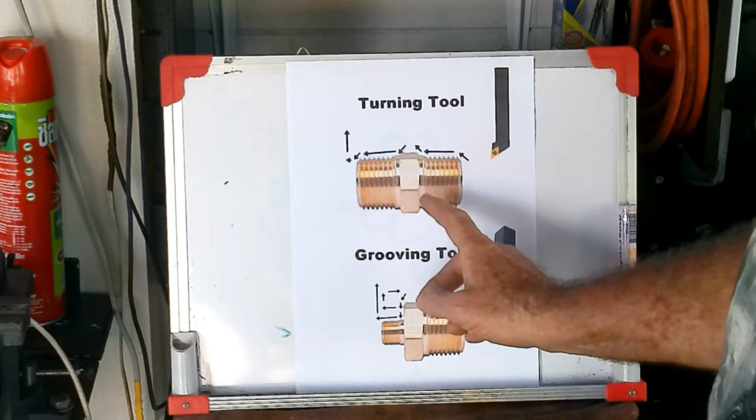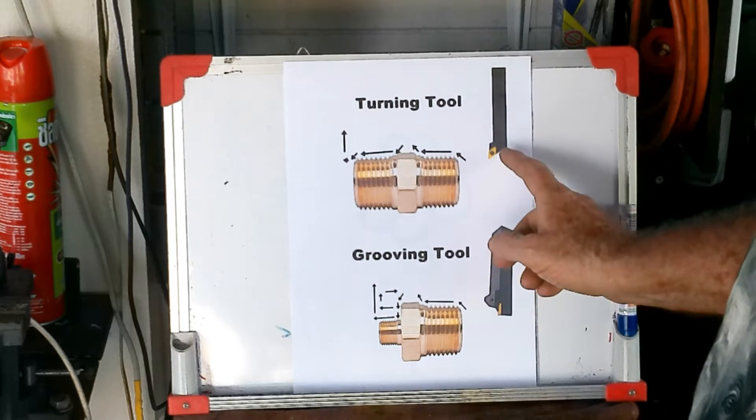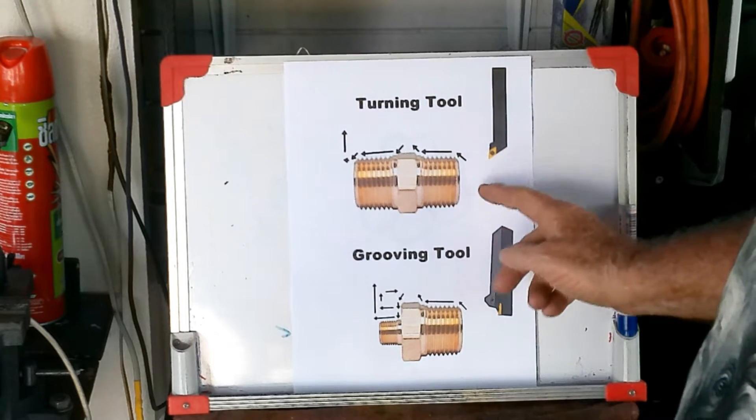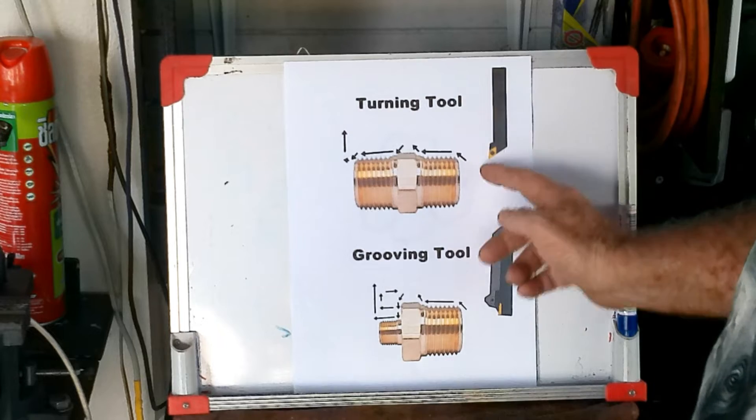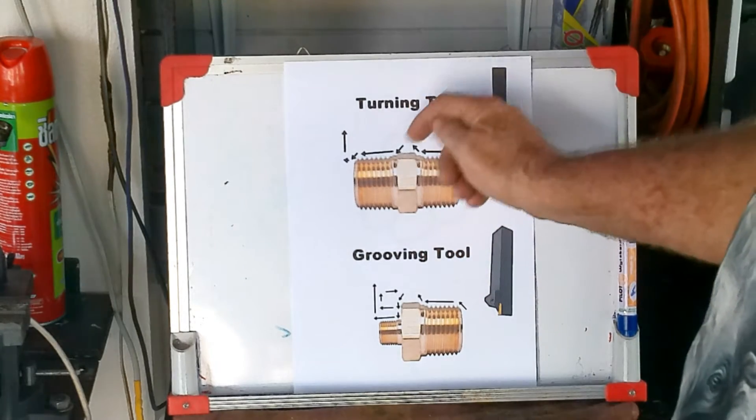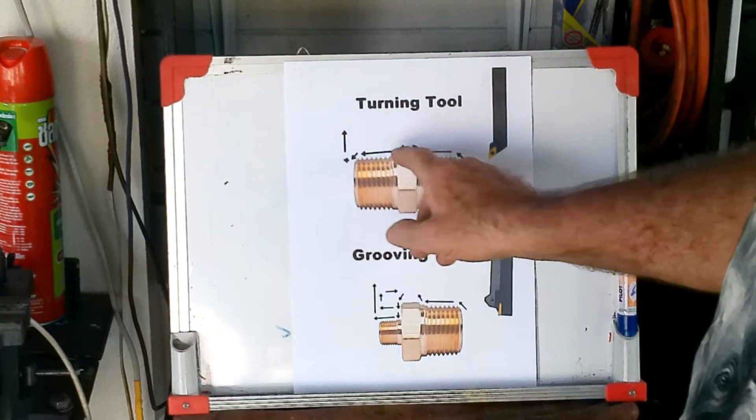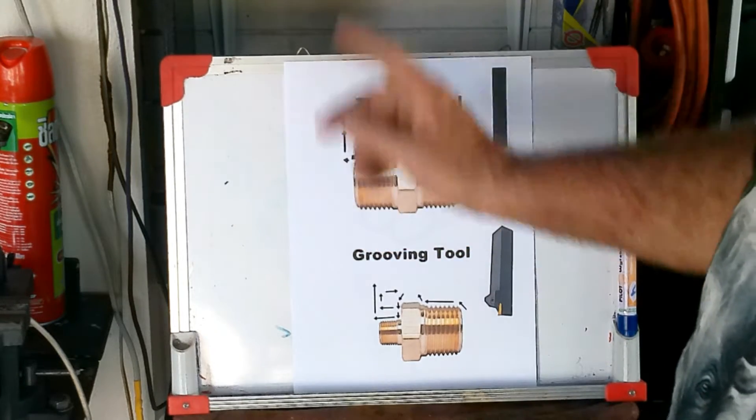If we were making something like this, half inch BSP nipple, we'd just use this style of turning tool and it'd just be a simple case of down, face it up, turn the taper, put the chamfer on the hexagon, back in, quite often just use the back end.